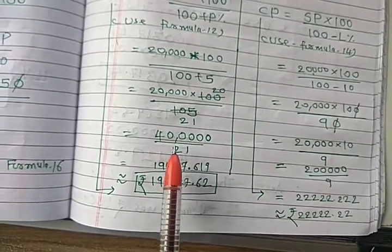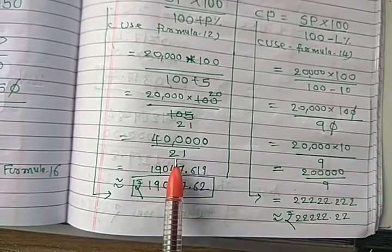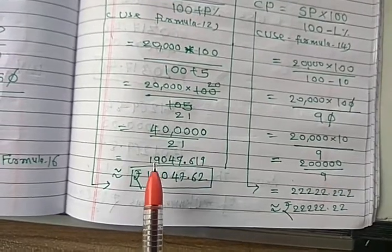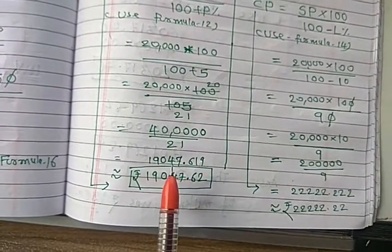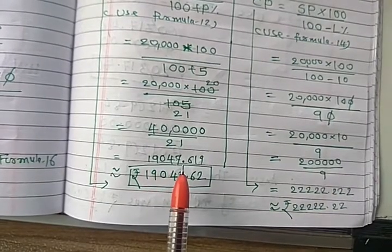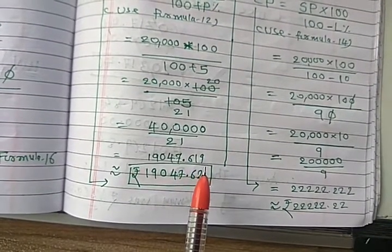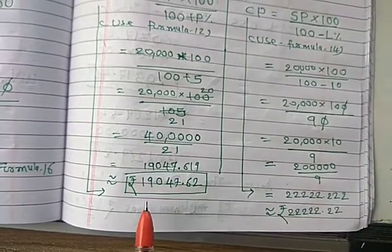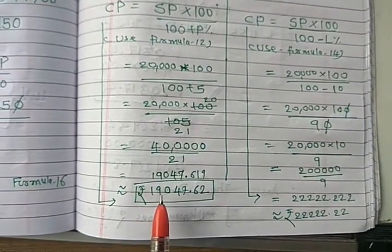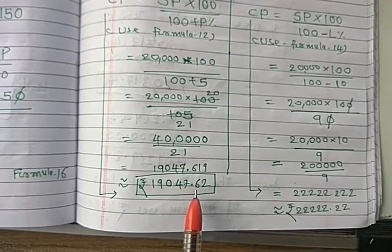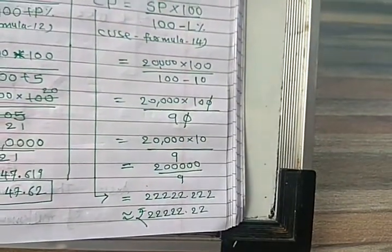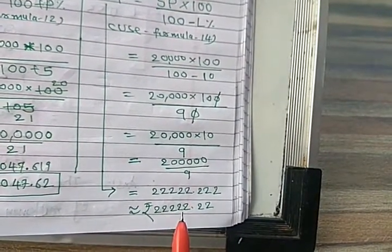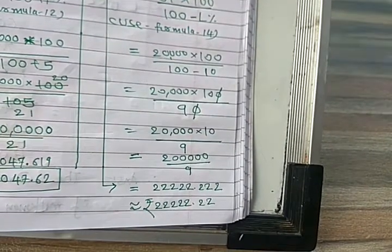Do it for calculation. 20,000 into 100 upon 100 plus 5, so you will get 4 lakhs upon 21. So when 4 lakhs divide by 21, you will get 19,047 rupees point 62. Similarly here, 2 lakhs divide by 9, you will get this value approximately 22,222 point 22.